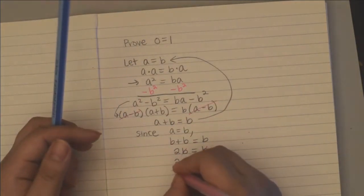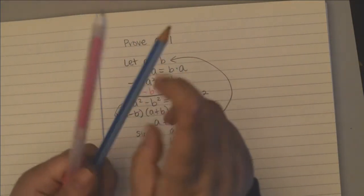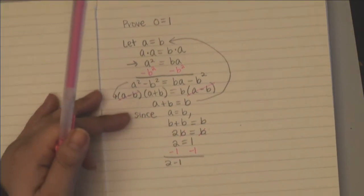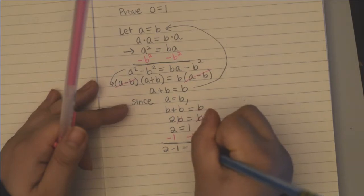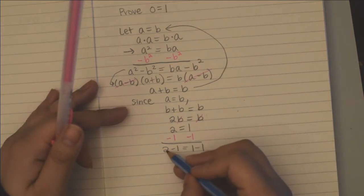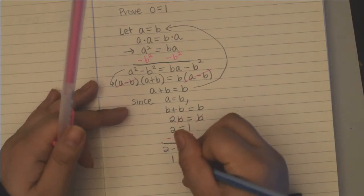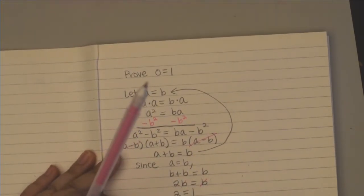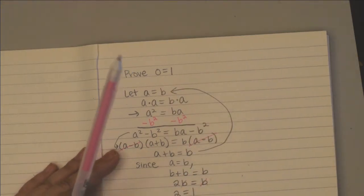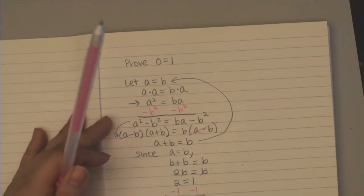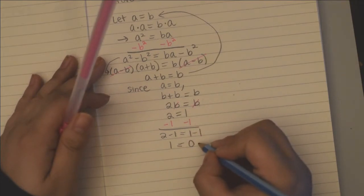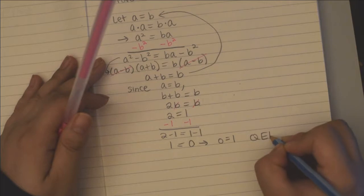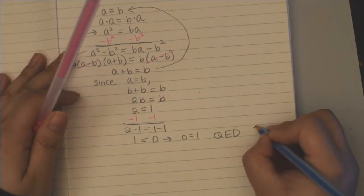And then subtract 1 on both sides. So 2 minus 1 equals 1 minus 1. So 2 minus 1 is 1, equals 1 minus 1 equals 0. And so 1 equals 0, so 0 equals 1 based on the reflexivity of the equals sign. QED. That's it! Isn't that pretty cool?